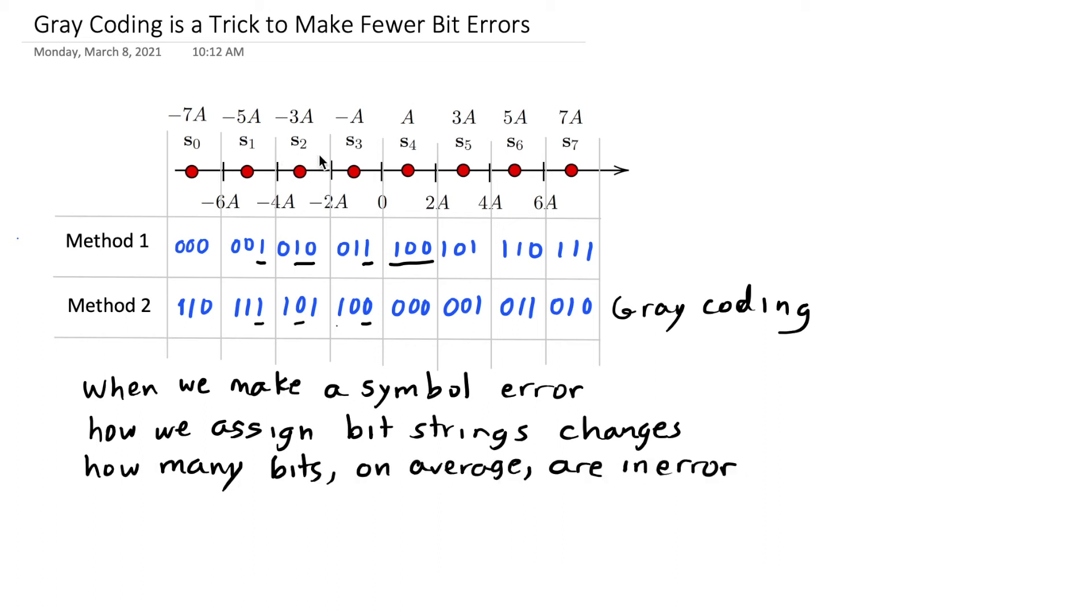When I send symbol 3, for example, I have this Gaussian bell-shaped curve describing the value that I measure. And if it goes below this threshold, I make an error with symbol 2. But there's a small chance that I make an error with symbol 1. And that chance that I make an error by deciding symbol 1 is very, very small compared to the probability that I would make an error with symbol 2, or for that matter, symbol 4.